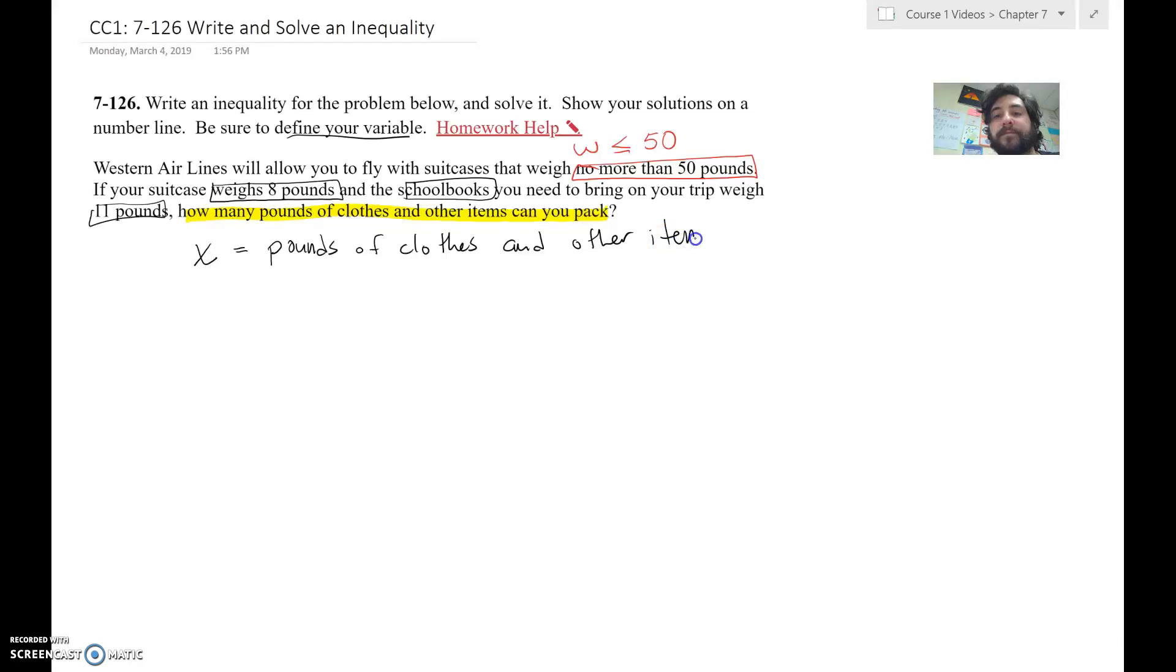All right. And what do we know? We know that the weight of the suitcase must be less than or equal to 50 pounds. And what goes into this weight of our suitcase? Well, we know that it's going to be the 8 pounds, that we know that the weight is going to be 8 pounds for the case. And we're already going to have 11 pounds of books. And then the rest is the clothes and other items. We know that that's got to be less than or equal to 50 pounds. So we know that that's the total weight.